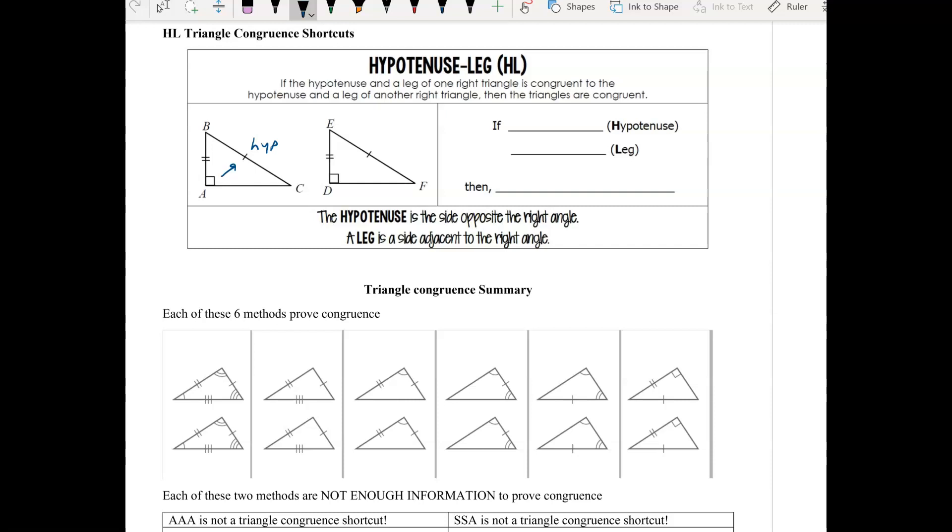So what we say is if the hypotenuse, or in this case segment BC, is congruent to segment EF, and a leg, in this case segment AB, is congruent to segment DE, then we can say the triangles are congruent. So triangle ABC is congruent to triangle DEF.